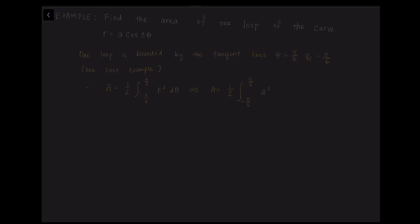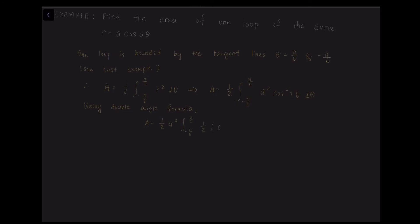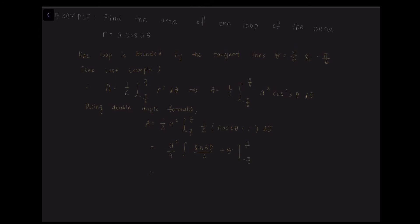Substituting r equals a cos 3 theta, we rewrite as A equals one half times the integral of a squared cos squared 3 theta d theta. Using the double angle formula, we have A equals one half a squared times the integral of one half times (cos 6 theta plus 1) d theta. Simplifying gives a squared over 4 times [sin 6 theta over 6 plus theta] evaluated from negative π over 6 to π over 6. Substituting the boundaries, we obtain the area as a squared times π over 12. That is the area of one loop.